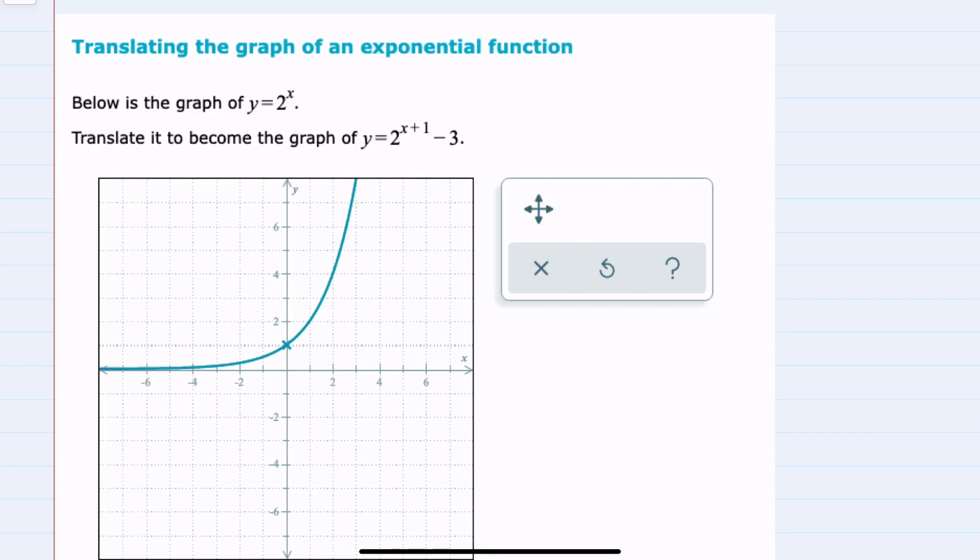In this video, I'll be helping you with the ALEKS problem type called translating the graph of an exponential function. We're given the graph here, y equals 2 to the x, and we're asked to use translations to create the graph of y equals 2 to the x plus 1 minus 3.